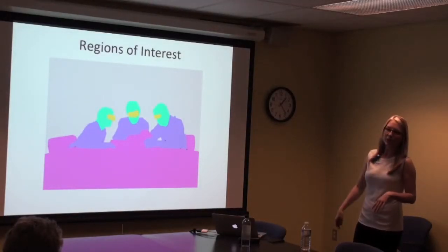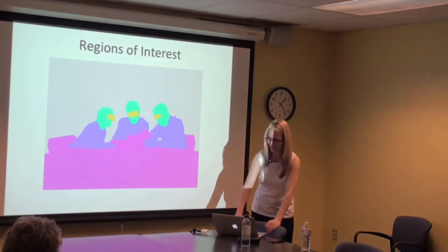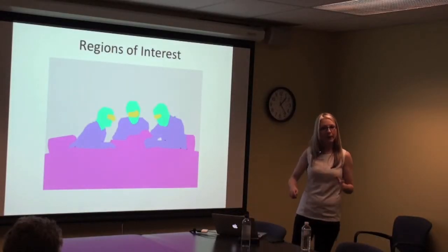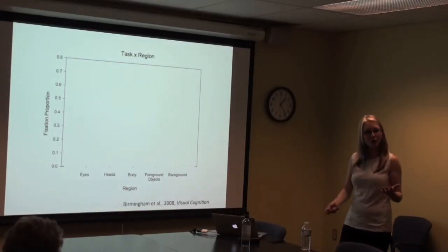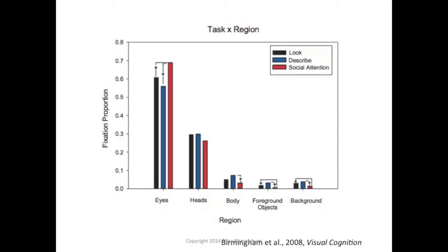I divided scenes up into regions of interest: objects, bodies, faces, eyes, and background. This let us look at how frequently people fixate on these different regions. Plotting fixation proportion — the overall proportion of eye movements in each region — as a function of task, we find an overall bias to select the eyes over other regions in the scene, and this is ramped up for the social attention task. When people are asked about attention, they start looking at the eyes more.